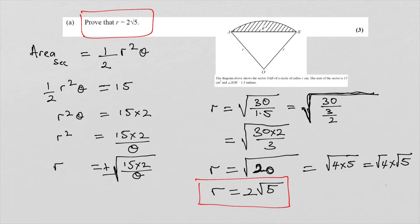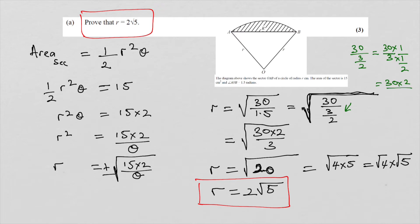Just to remind you: if you have 30 over 3 over 2, that can be written as 30 times 1 over (3 over 2). Since 1 over (1 over 2) equals 2, you get 30 times 2 over 3. In general, 1 over (1 over something) equals that something. Always remember that — it's very important when dividing a fraction.